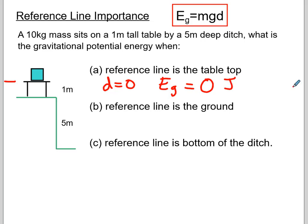If I set my reference line on the ground right here, then that would mean my d or my height above the reference line is one meter, which would mean my Eg would be mass, which is 10, times gravity, times the height above the ground, and I would have 98 joules. Yet it's the exact same condition. Nothing's changed, just my reference line. The problem is still the same.